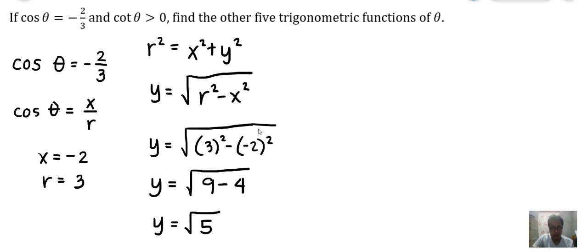We can now compute the other trigonometric functions. But remember, our value for y should be negative because our terminal side lies in the third quadrant. x should be negative, y should be negative, tangent and cotangent should be positive.